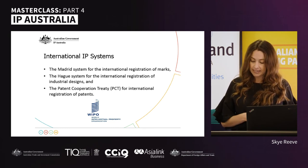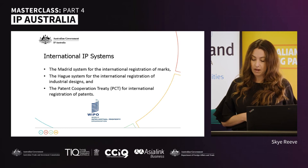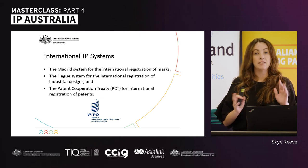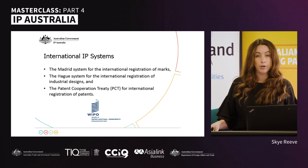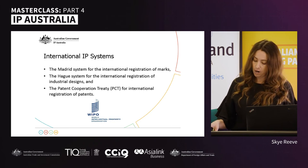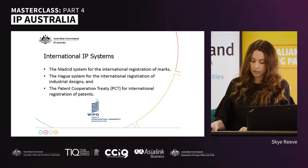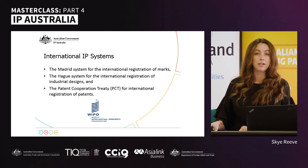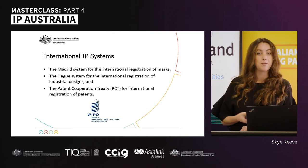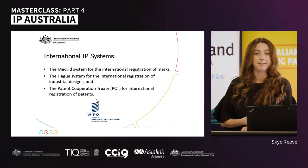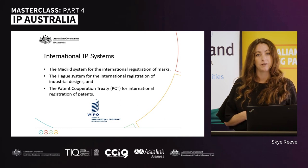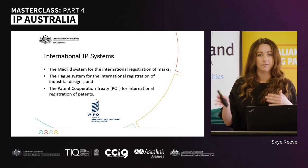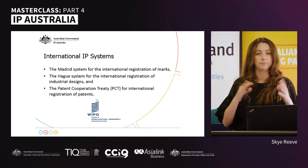Similar advantages exist in managing the IP right. With these international routing mechanisms, if the registration has to be renewed, assigned to a third party, or if other changes such as name or address have to be recorded, you can do it through that one system and it will affect all your international registrations — rather than having to go to each individual office separately.